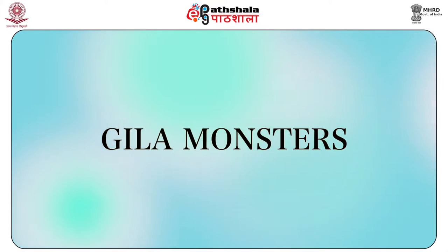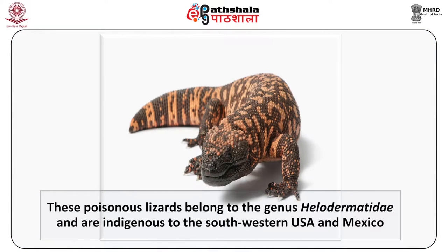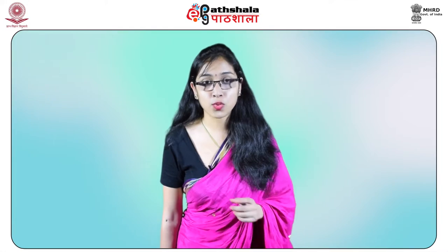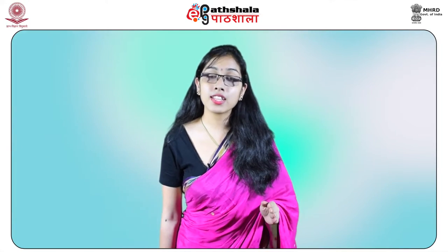Next are the Gila monsters. These poisonous lizards belong to the genus Helodermatidae and are indigenous to the southwestern USA and Mexico. They have poison glands on the mandible and deliver the venom along corrugated teeth into a bite. The venom contains hyaluronidase and proteases in addition to gilatoxin. The bite can lead to anaphylactoid syndrome.